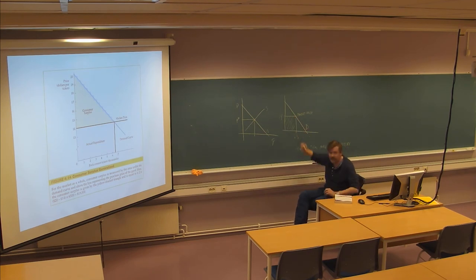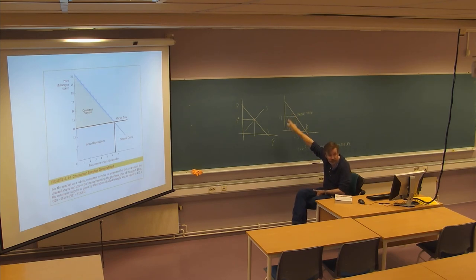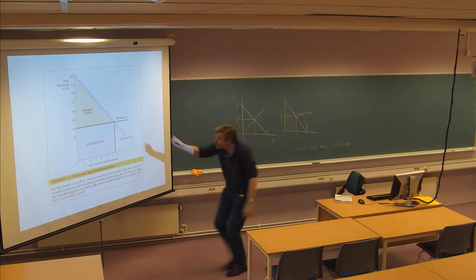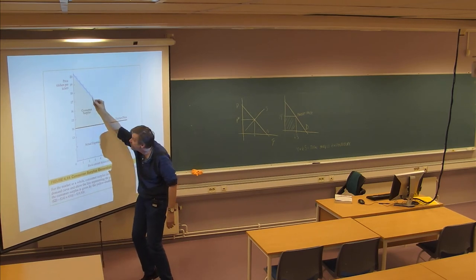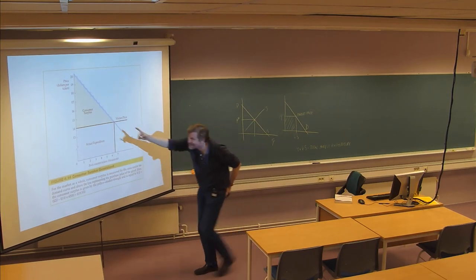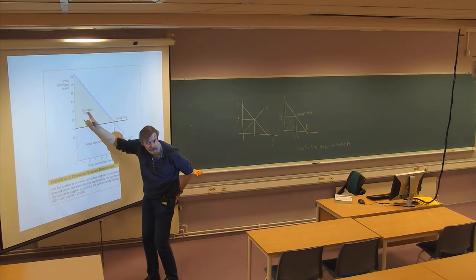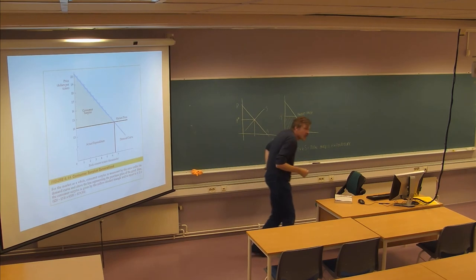Consumer surplus means that consumers above the market price line are willing to pay more than 14. For example, one consumer at the top is willing to pay 17.5 but only has to pay 14 — that difference is a surplus or profit for that consumer. All this area together constitutes the total consumer surplus — the total happiness or willingness to pay beyond the market price.